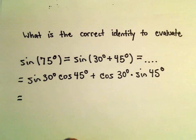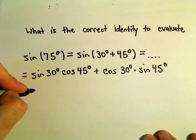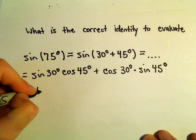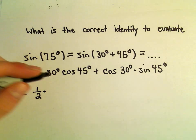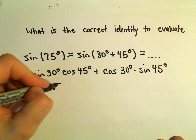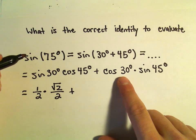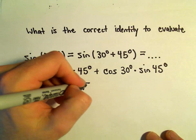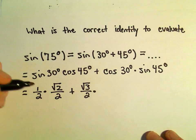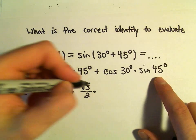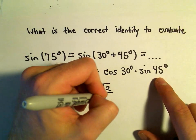So recall that sine of 30 degrees is going to give us one half. Cosine of 45 degrees is going to be square root of 2 over 2. Cosine of 30 degrees is going to be square root of 3 over 2. And again, sine of 45 degrees will be root 2 over 2.